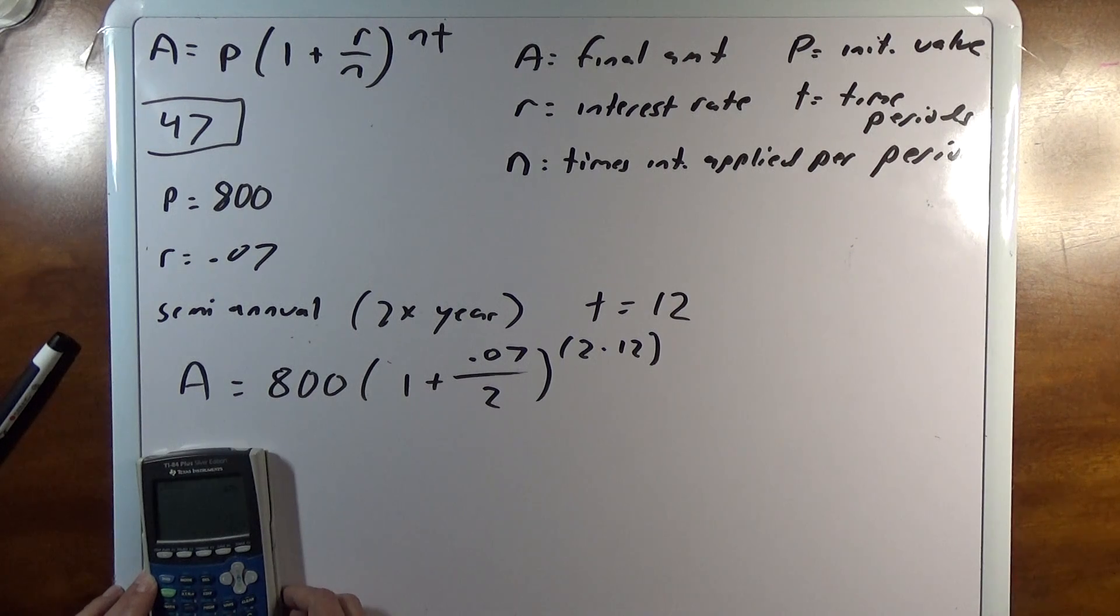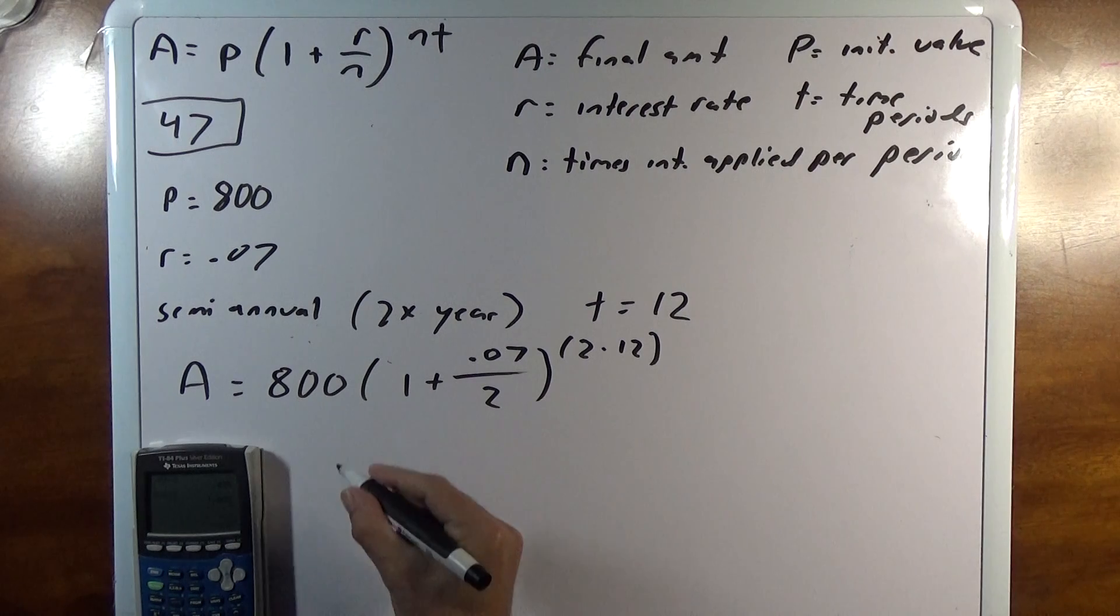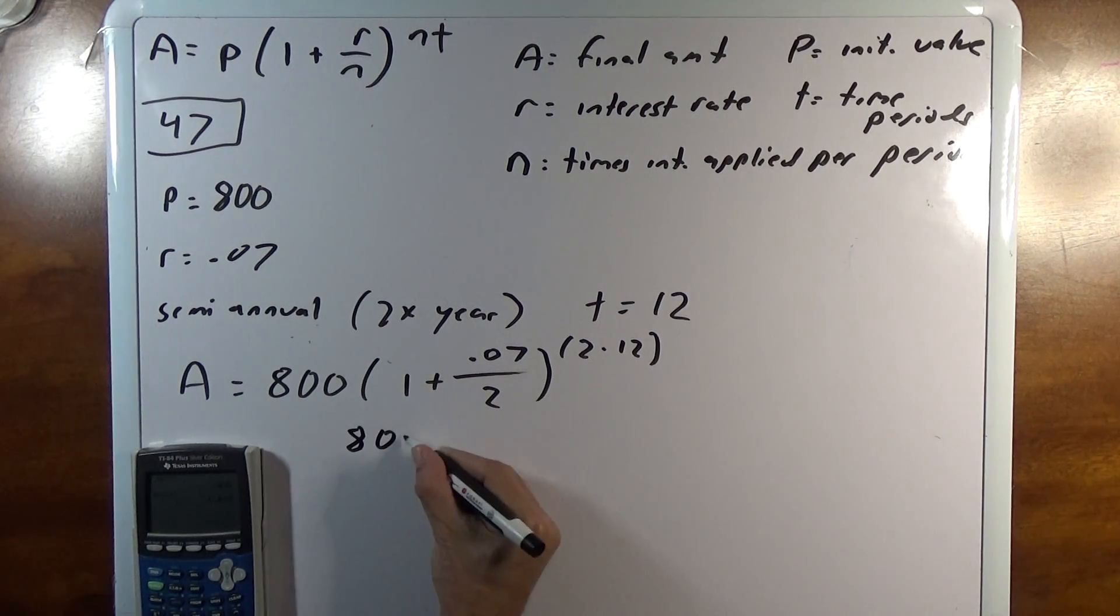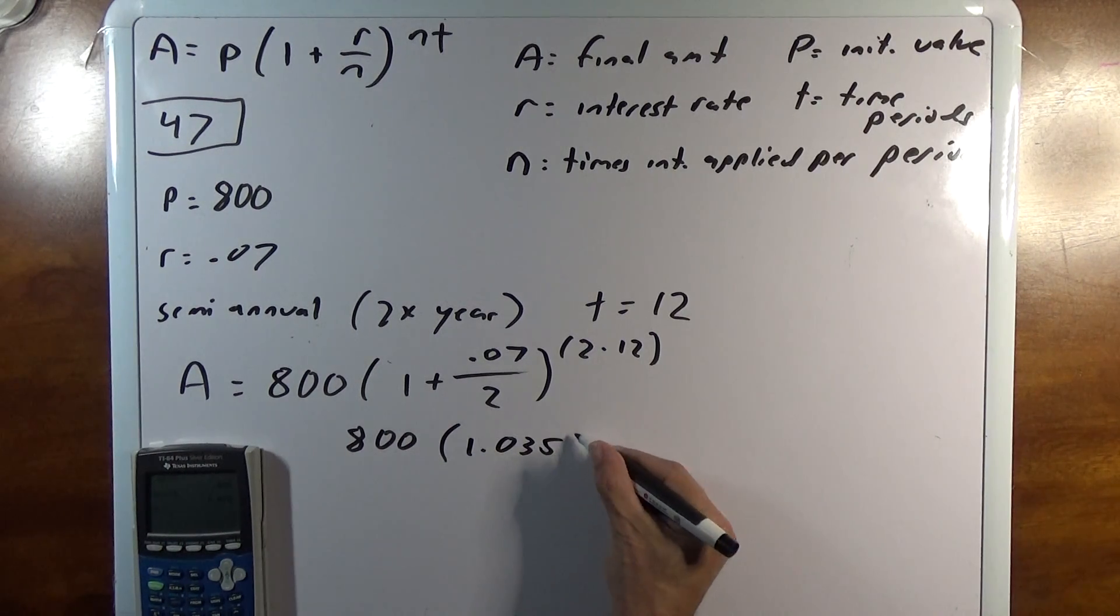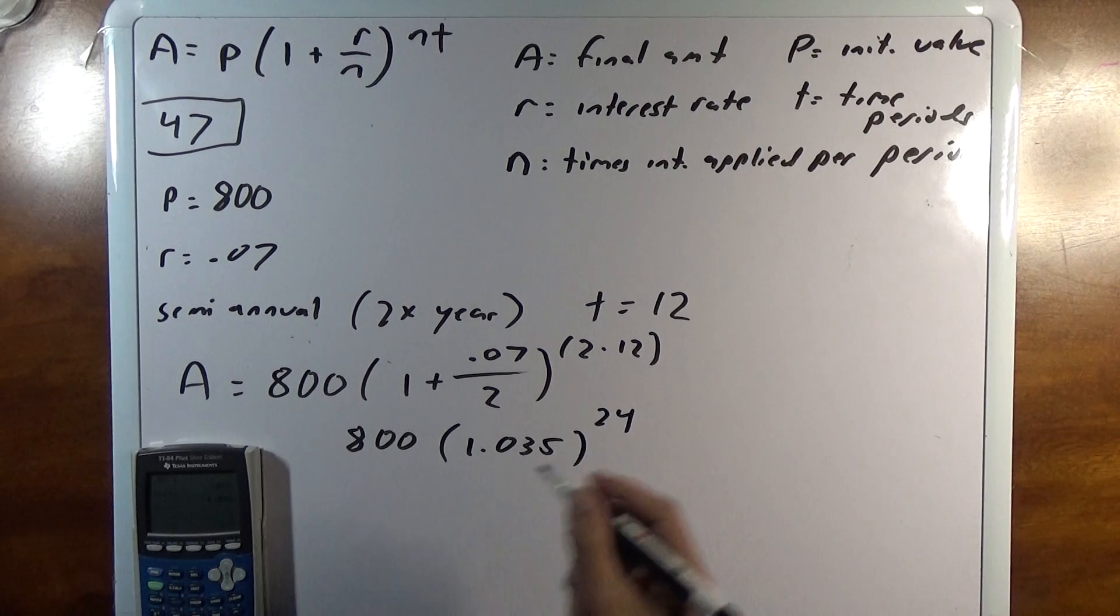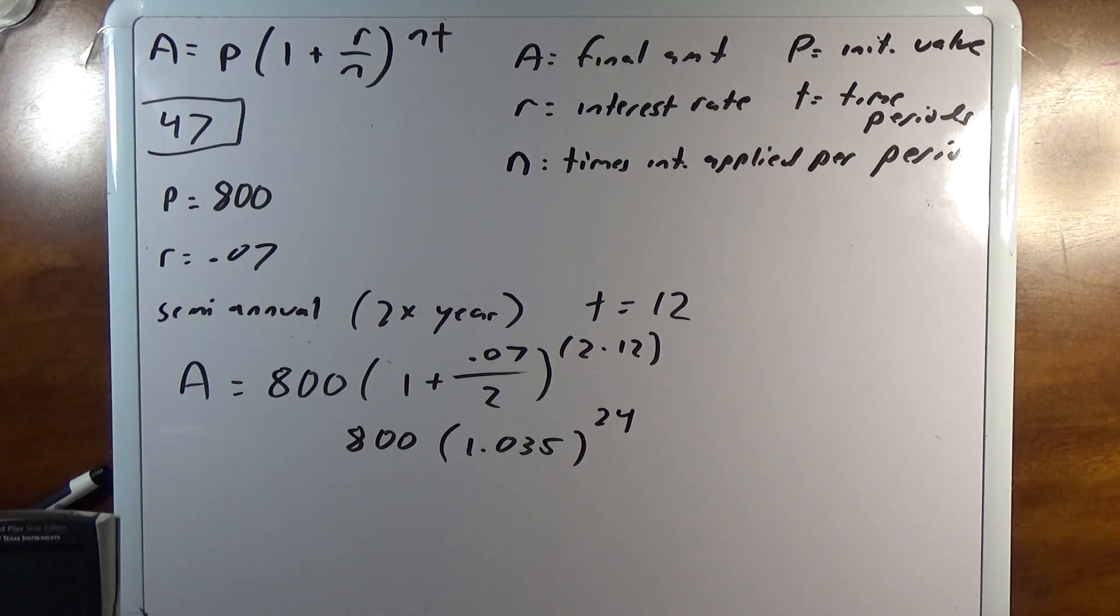0.035 plus 1. So I'm going to rewrite this as 800 times 1.035 to the 24th power. So I'll do 1.035 to the 24th, I'll get 2.28 times 800.